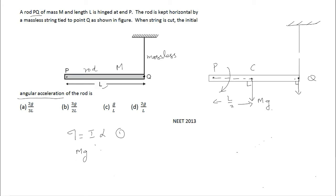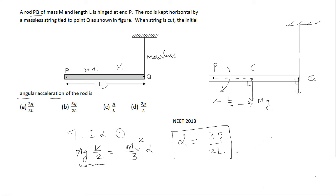So torque tau is F into R: F is Mg, and the perpendicular distance is L by 2, because the weight of the rod acts at its center of mass. So you will have Mg into L by 2. The moment of inertia of the rod about an axis passing through its end P perpendicular to the rod is ML squared by 3 — not ML squared by 12, which is for the perpendicular axis through the center. So: Mg·(L/2) = (ML²/3)·α. Cancelling one L and one M, alpha equals 3G by 2L.